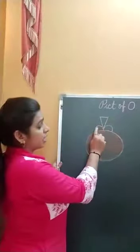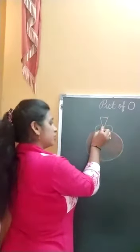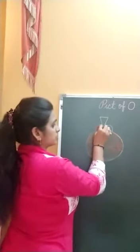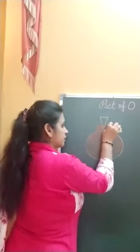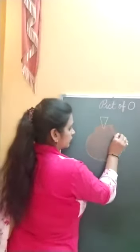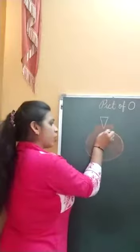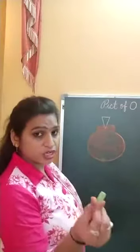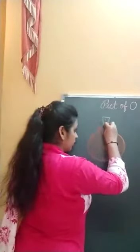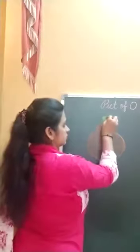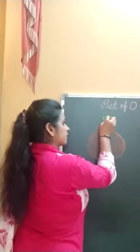Here also — yahaan bhi haan orange color karayenge. So we will fill it like this. So we have filled orange color in the orange. Now in this stem we will fill green color. So we will fill it like this.